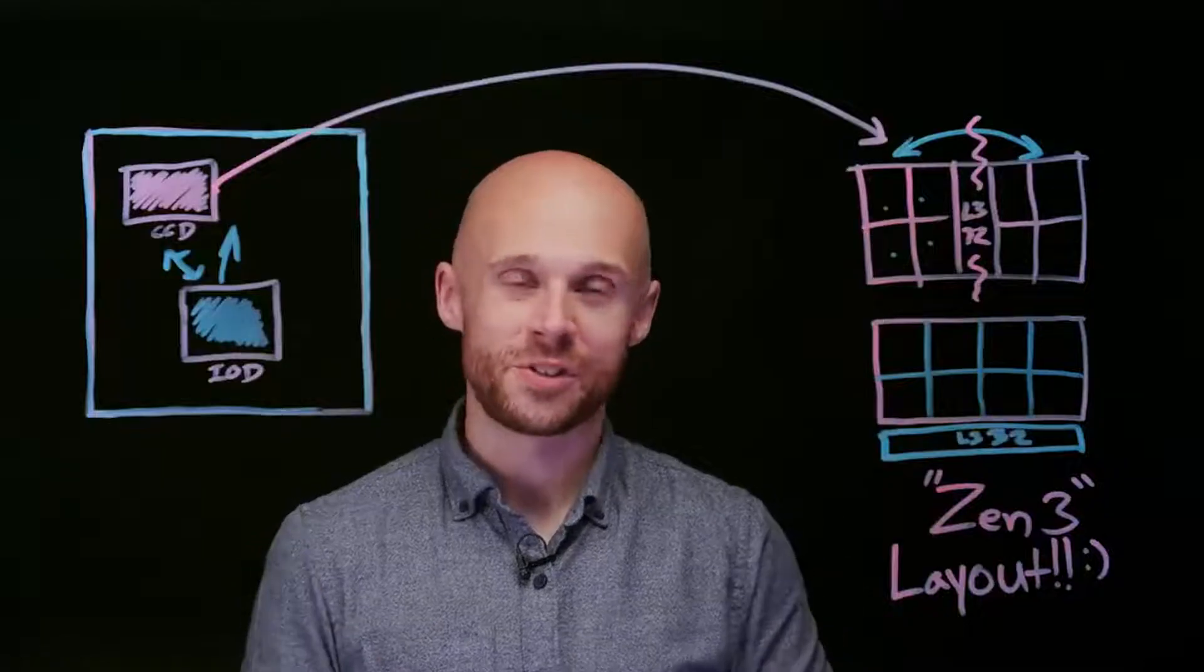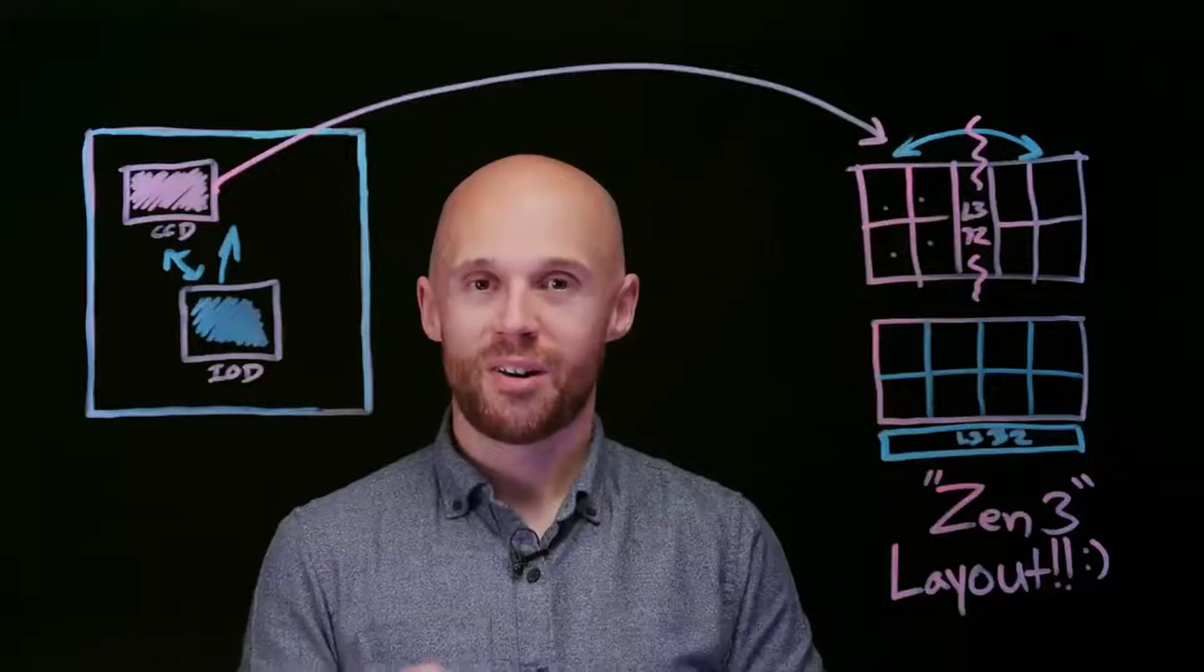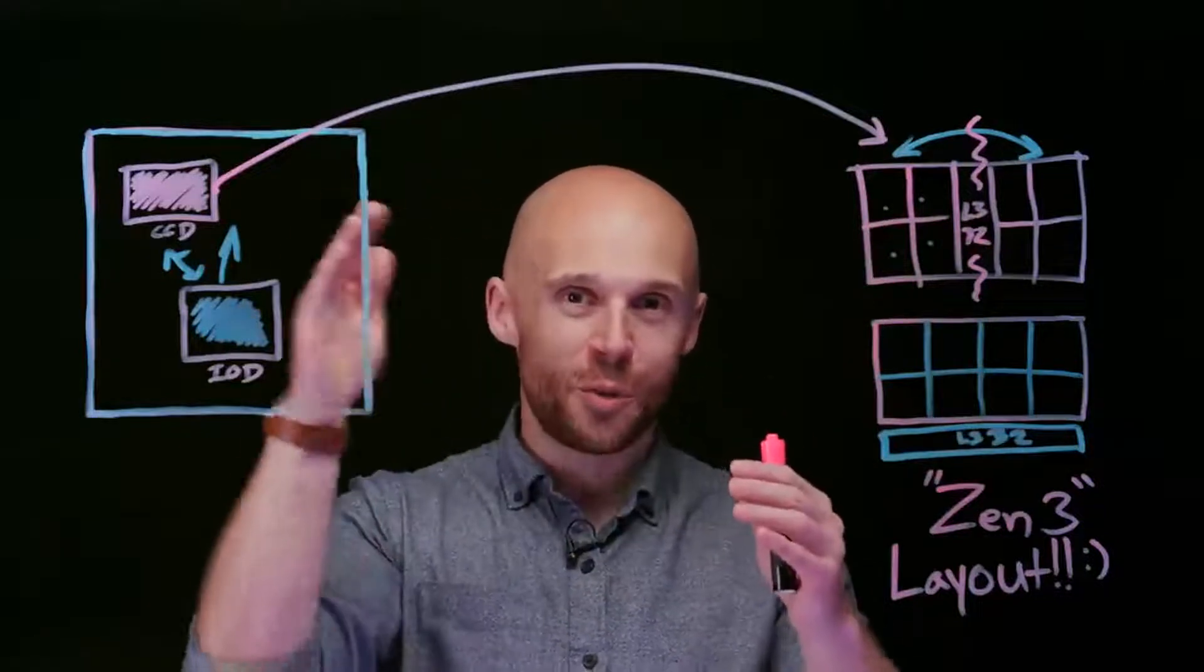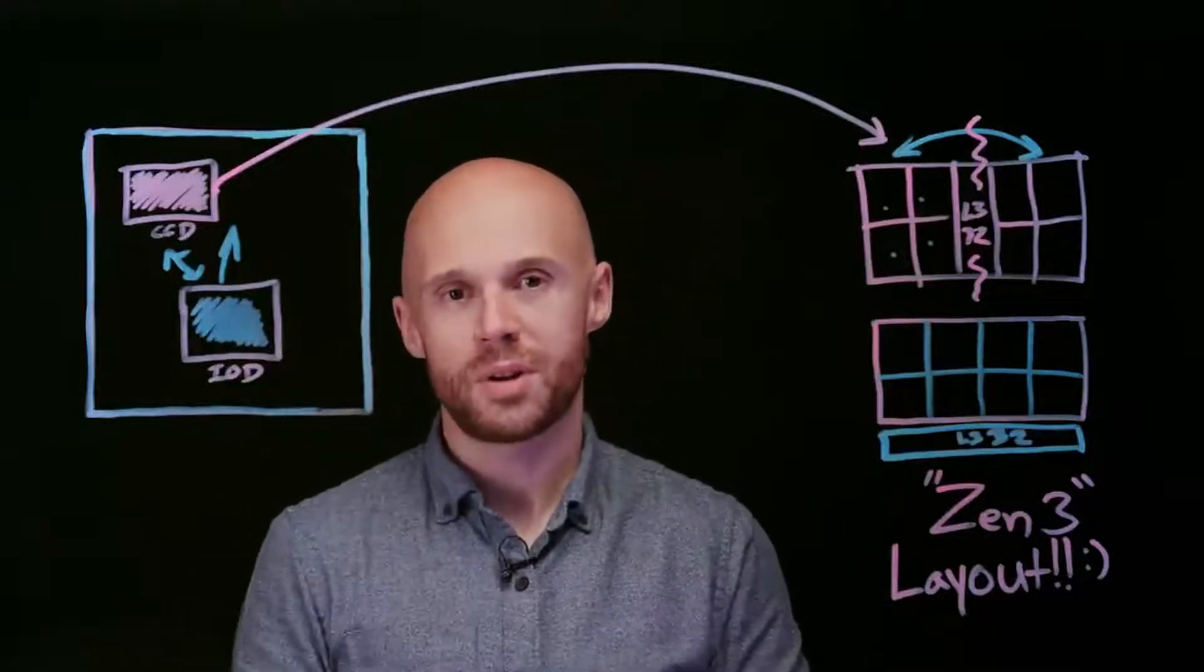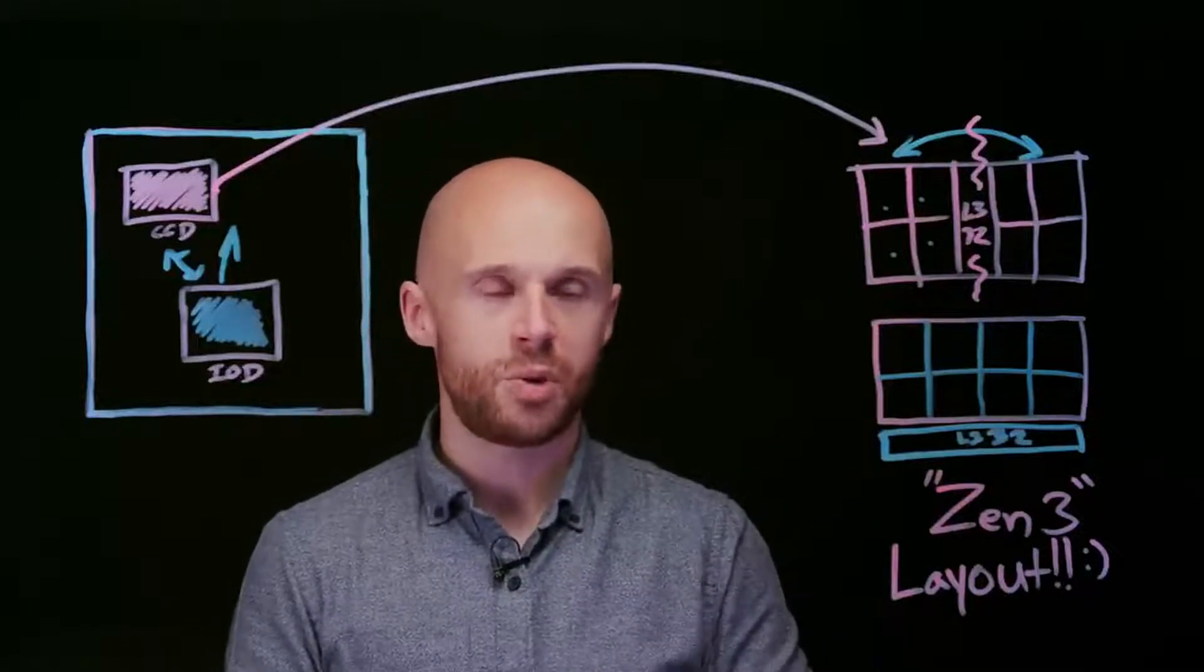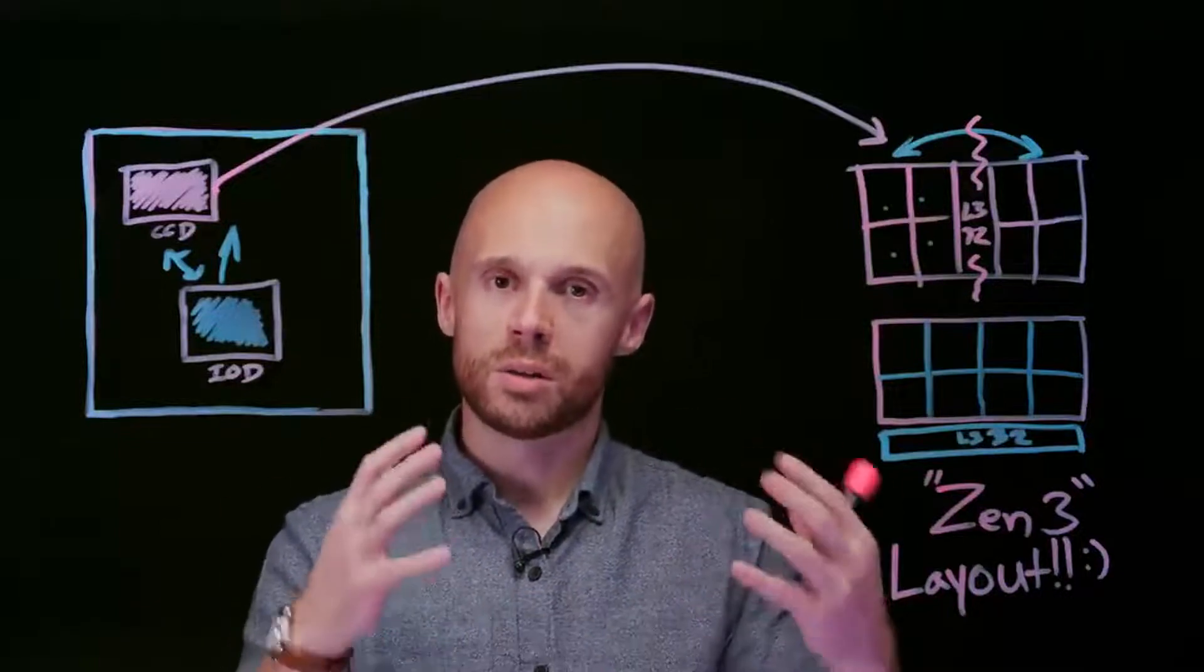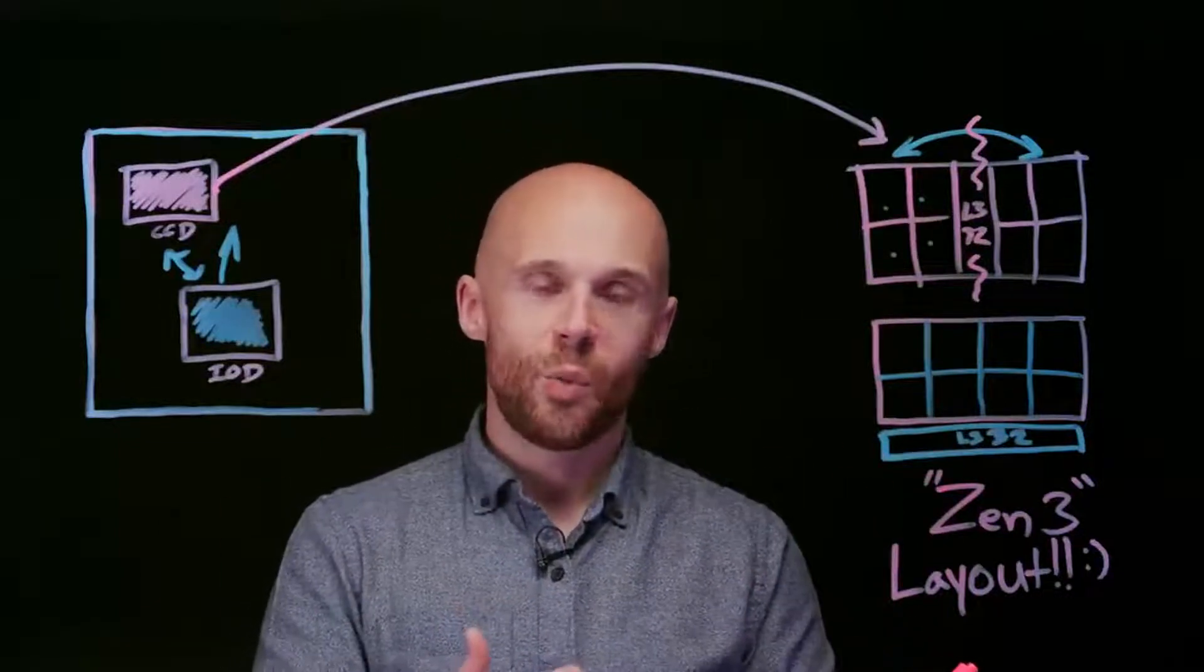Oftentimes, it's difficult to talk about architectural changes in a diagram. Some of them are a little new connection from point A to point B, and that doesn't show up well in a picture. But this one does. This is a major design change coming into Zen 3, bringing eight cores and 32 megs of cache together in one large block.